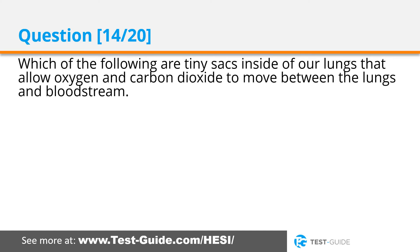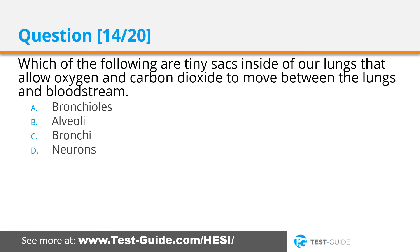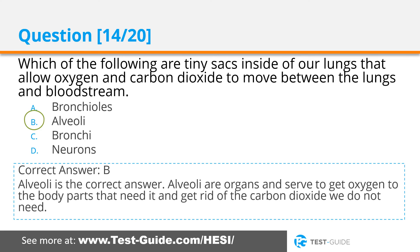Question fourteen: Which of the following are tiny sacs inside our lungs that allow oxygen and carbon dioxide to move between the lungs and bloodstream? Options: bronchioles, alveoli, bronchi. Correct answer B. Alveoli is the correct answer. Alveoli serve to get oxygen to the body parts that need it and get rid of the carbon dioxide we do not need.